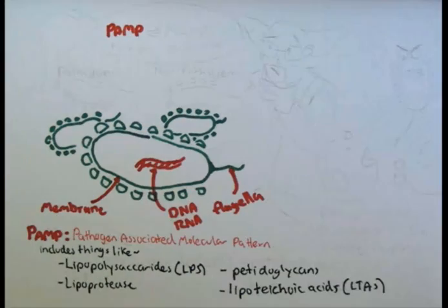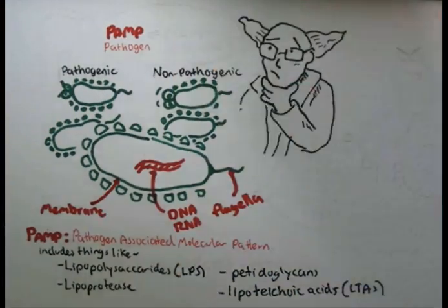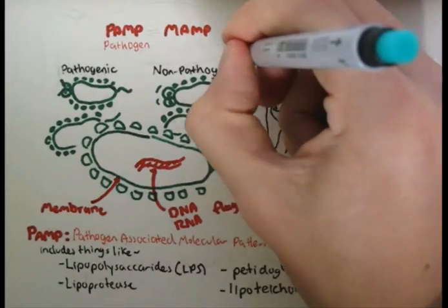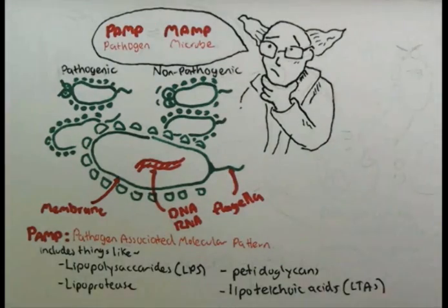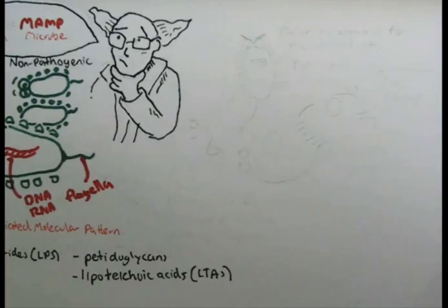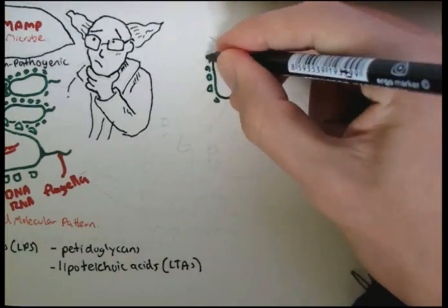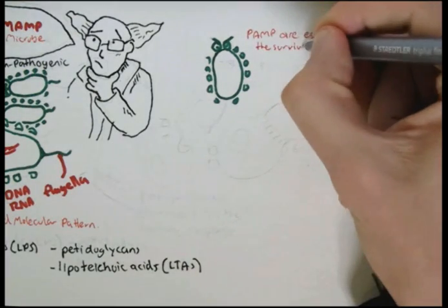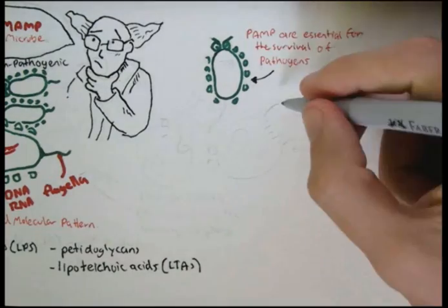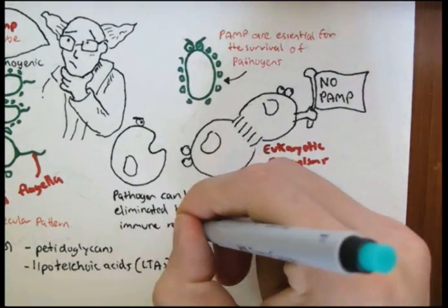PAMPs are actually found in both pathogenic and non-pathogenic microorganisms. People debate about this, and the word 'microbes' is sometimes substituted for 'pathogens,' giving rise to the term MAMP. However, we will use PAMP since it is used more often. These PAMPs are essential for the survival of all pathogens, and they are not found in any eukaryotic organisms, so they can be identified in the body as foreign substances that need to be eliminated through the immune response.